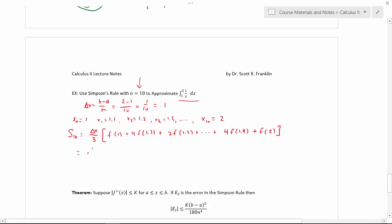So actually plugging everything in, I get 0.1 divided by 3. I'm going to write it all the way out just so we have it in front of us, but then we'll plug that into a calculator. So this becomes 1 over 1 plus 4 times 1 over 1.1 plus 2 times 1 over 1.2 plus 4 times 1 over 1.3 plus 2 times 1 over 1.4 plus 4 times 1 over 1.5. Halfway there.